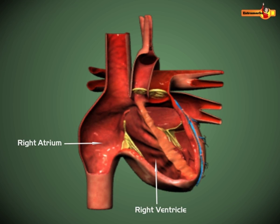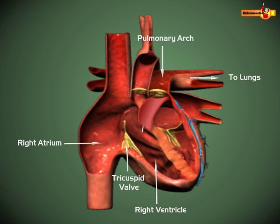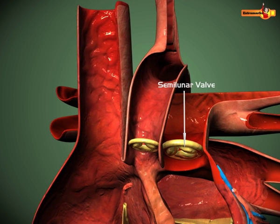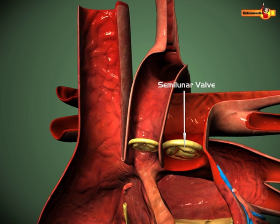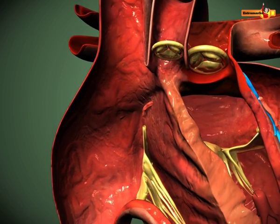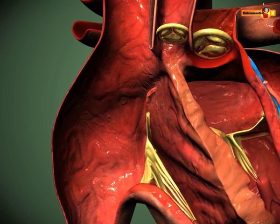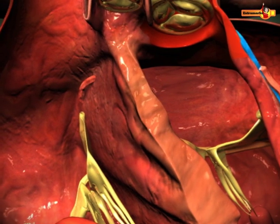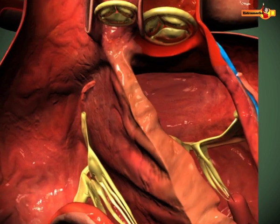This opening is guarded by a valve called the tricuspid valve. The right ventricle opens into the pulmonary artery, which carries the blood into the lungs for oxygenation. A semilunar valve present at the base of this vessel guards the opening to prevent the backflow of blood into the heart.